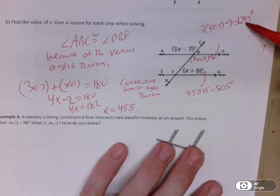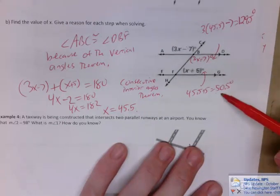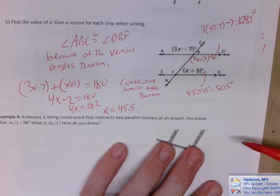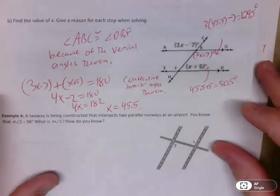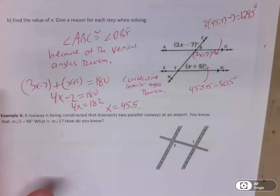Just to check it, 129.5 plus 50.5 is, in fact, 180 degrees. So you know you did it right. It's a good way to check. That one's a little more complicated, but still doable.